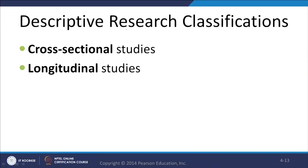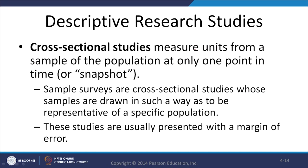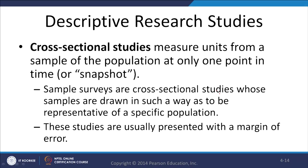Descriptive research is classified into two types: cross-sectional studies and longitudinal studies. Cross-sectional studies are like a horizontal study — they measure units from a sample of the population at only one point in time, a snapshot. You collect respondents' opinions only once, maybe over a period of six months or a year. Sample surveys are cross-sectional studies, where samples are drawn to be representative of a specific population.